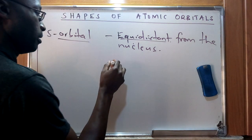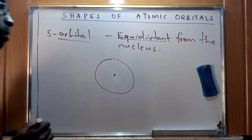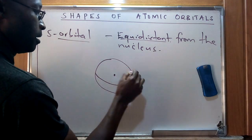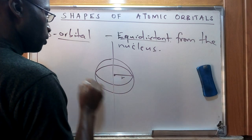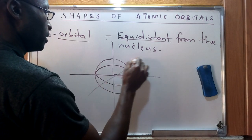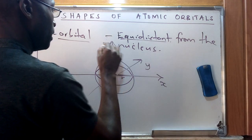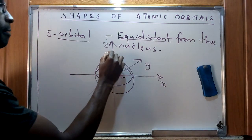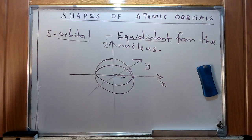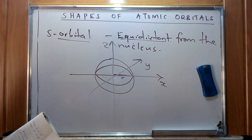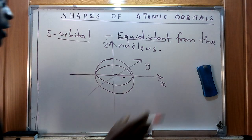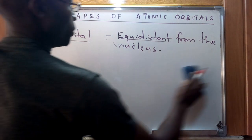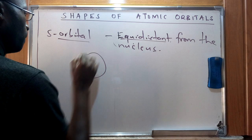If the nucleus is centrally located, the distance that is equidistant in all directions forms a spherical shape. A volume that encompasses an equal distance from the center forms a sphere. Therefore, the electron cloud of the s orbital is equidistant in all directions from the nucleus, and the s orbital assumes a spherical shape.